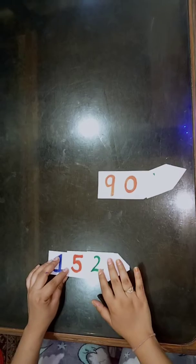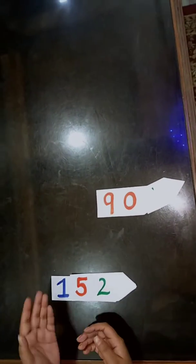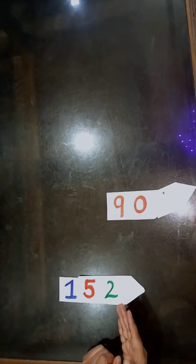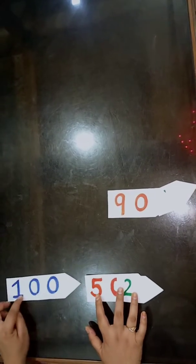Now let's take another example that is 152. So in number 152, we are having 100, 5 10's means 50 and 2 1's means 2. So how we can expand it like this.